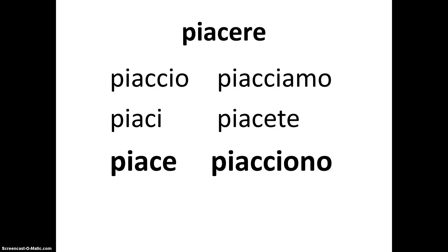To begin, let's take a look at how the verb Piacere is conjugated in the present tense. Piacere is an irregular verb: piaccio, piaci, piace, piacciamo, piacete, piacciono. Piacere is used primarily with the third person forms, piace and piacciono.